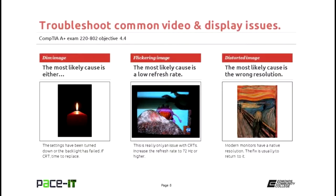Dim image has a couple of causes. Someone may have turned down the brightness level of the monitor — you can turn it back up. Or your inverter or backlight may be about to fail, in which case you're replacing the monitor. And if you're using a CRT type monitor and the brightness hasn't been turned down, it's time to replace it because that electron gun is about to fail. If you're using a CRT and you're not a high-end graphics artist or photographer, you should probably replace that monitor anyway — it's about time.